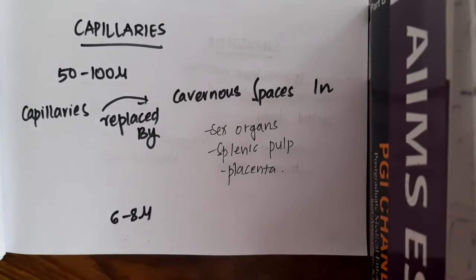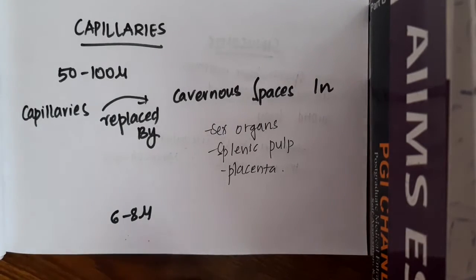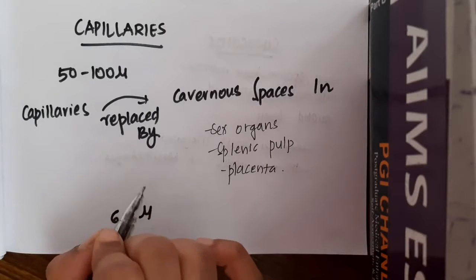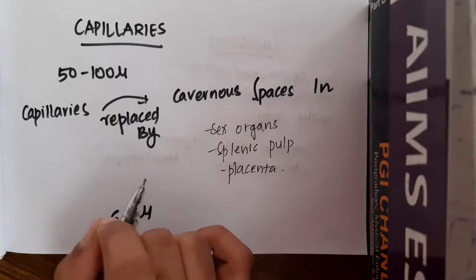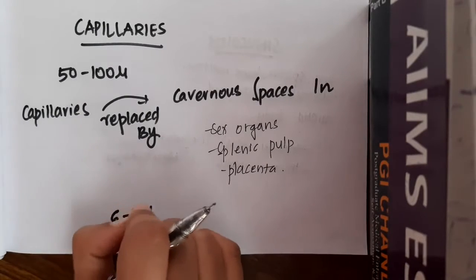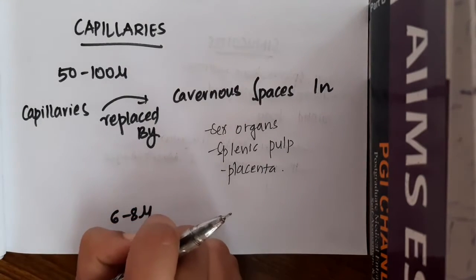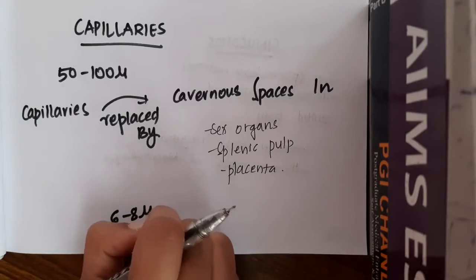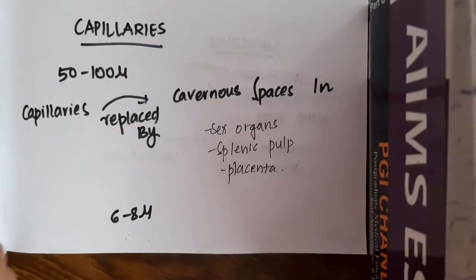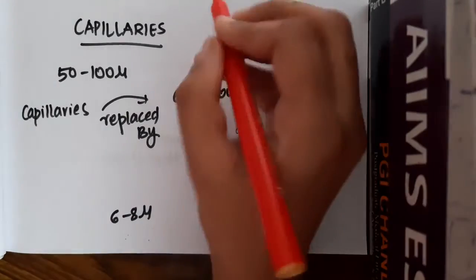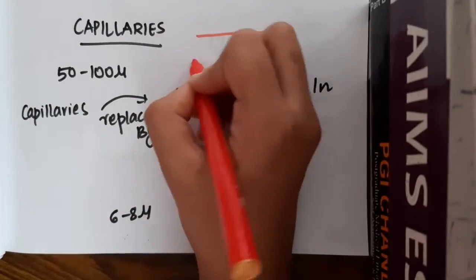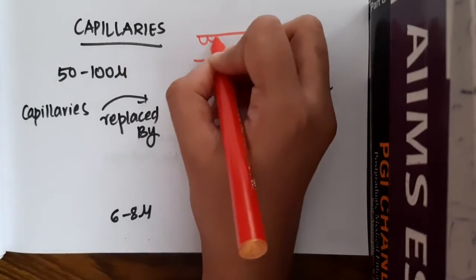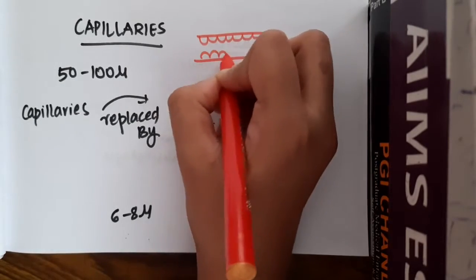Hello friends, let us now learn about the capillaries. Capillaries are small network of microscopic endothelial tubes, and they contain a single layer of endothelium.